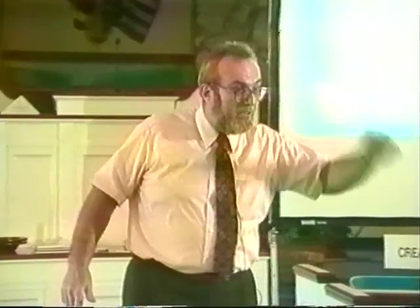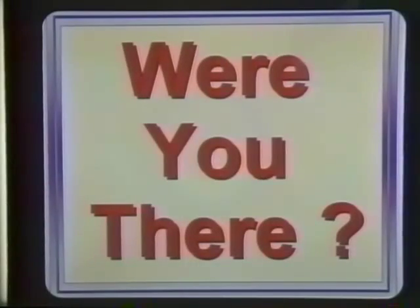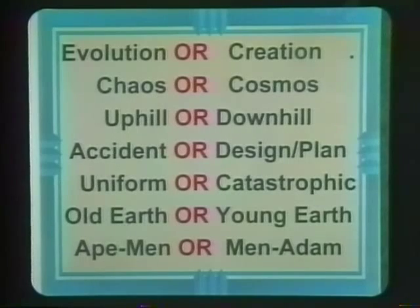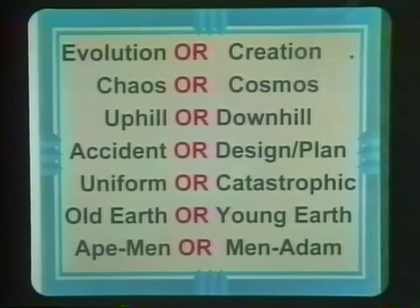The rate at which things happen is the same in the past as it is today — or there's a catastrophic process, Noah's flood, that changes the face of this planet. The earth is billions of years old — were you there? Or the earth is young, thousands of years old. And finally, we are either ape-men descended from apes, or we are men descended from Adam. Those are the two possibilities.